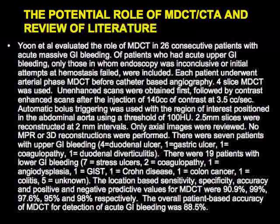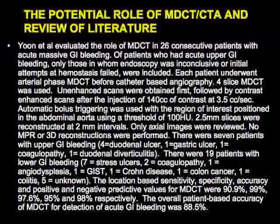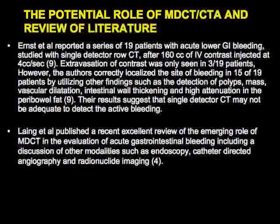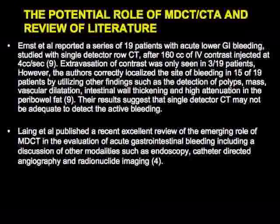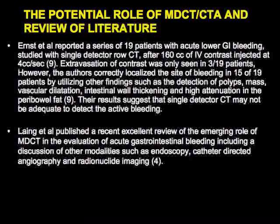...and 98 percent respectively. The overall patient-based accuracy for GI bleeding was 88.5 percent — very impressive, especially considering only axial images were reviewed. In our experience, 3D imaging is really needed, particularly for small aneurysms. Ernst looked at 19 patients with acute lower GI bleeding using single-detector CT; only three of 19 had bleeding identified, but that reflects the limitations of old technology.